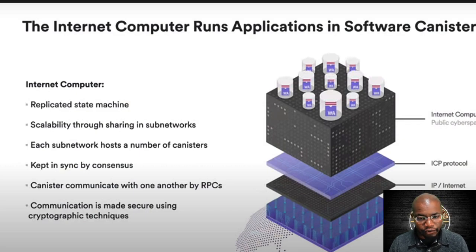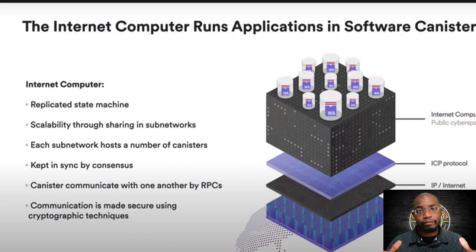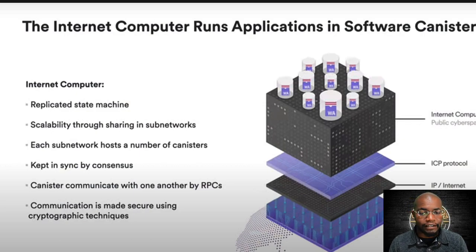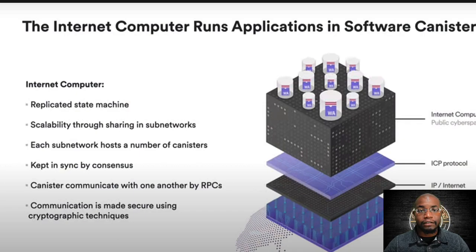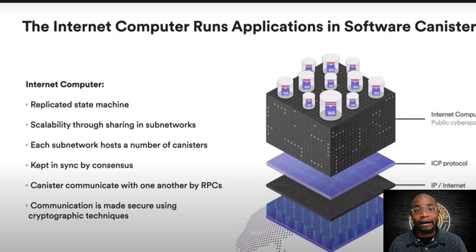Taking a look at some of these architectural bullet points — the Internet Computer is a replicated state machine. Canisters are analogous to smart contracts; they consist of your code and your state, your code and your data. These canisters living on subnets are replicated throughout all the nodes on a particular subnet. You have scalability through sharding within those subnets, and each subnetwork hosts a number of canisters. But the bread and butter is that it's kept in sync by consensus.